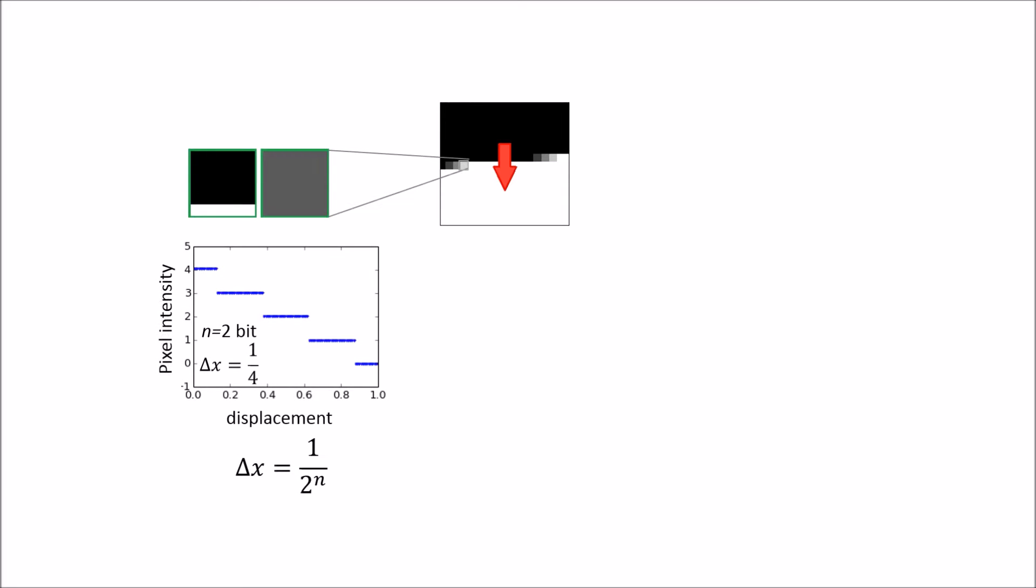During the transition of the line over a pixel, the pixel will transit over all 2 to n intensity states, n being the camera bit depth, thereby producing a maximal displacement resolution of 1 over 2 to n of a pixel. For an 8-bit camera, this translates to about 4 thousandths of a pixel.